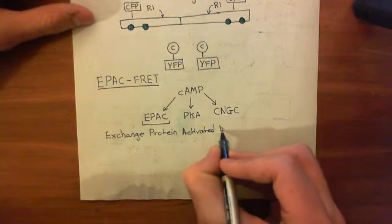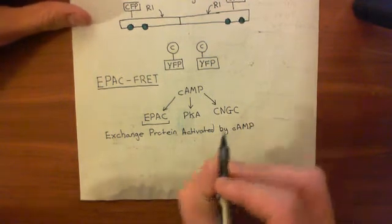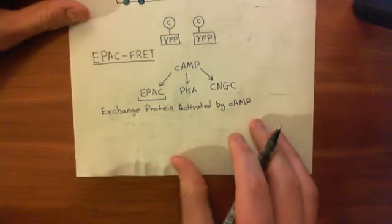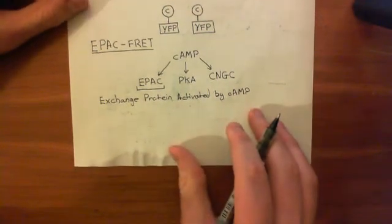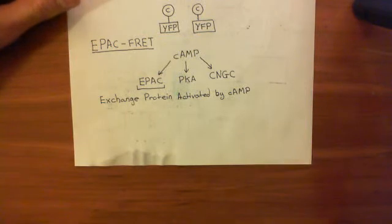So basically, cyclic AMP binds to it and changes its conformation. And we can use that to make an altered version of EPAC that will act as a cyclic AMP sensor.